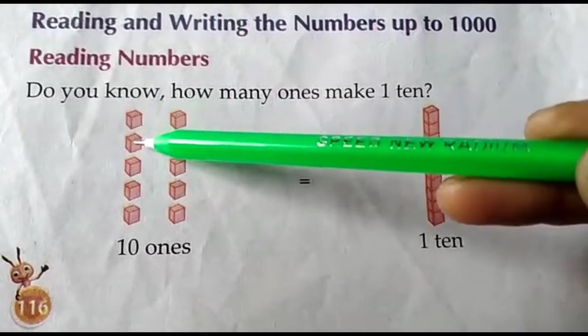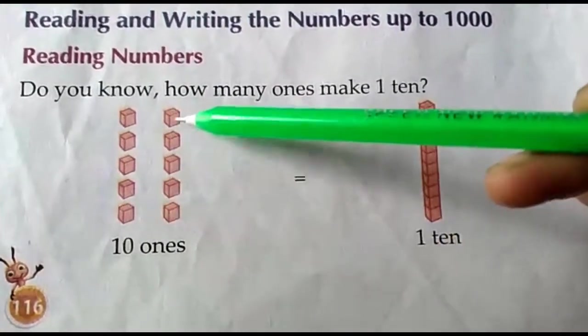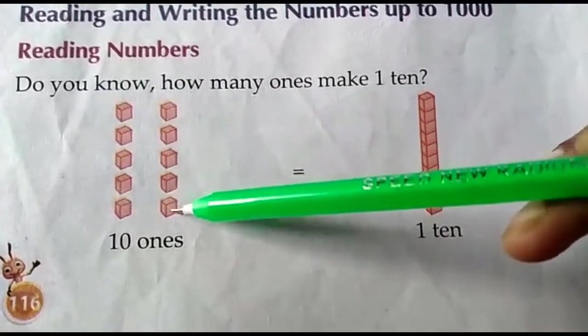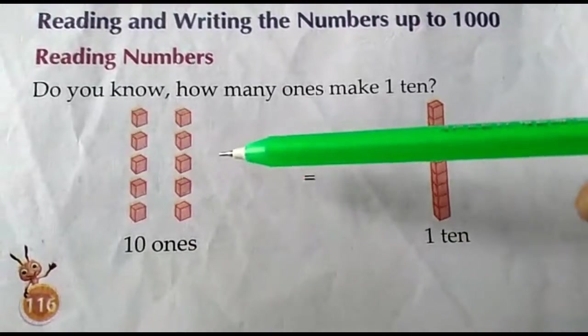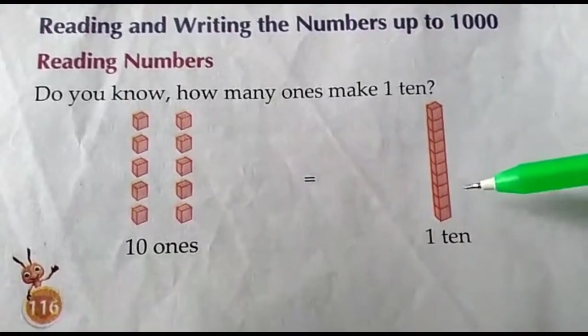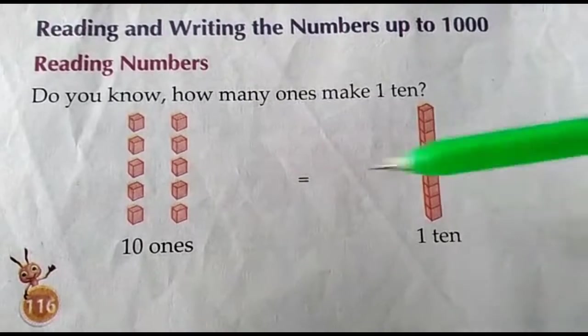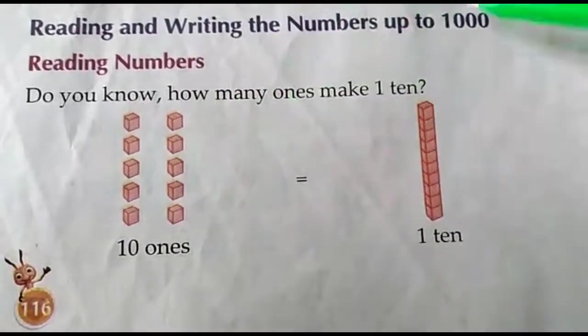Let us count. 1, 2, 3, 4, 5, 6, 7, 8, 9, 10. So, ten ones are ten. So, ten ones make one ten.